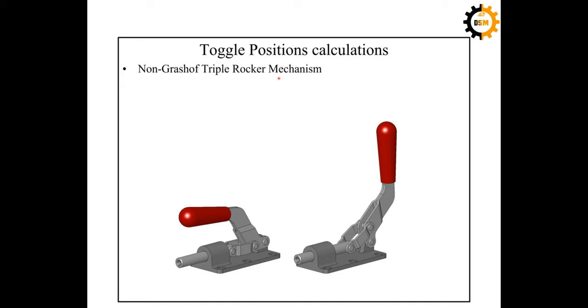We have to find out how to calculate the toggle positions for our mechanism — the positions where the mechanism is jammed or stopped.